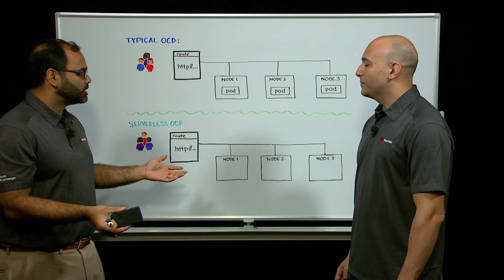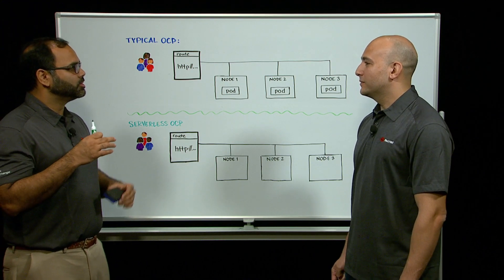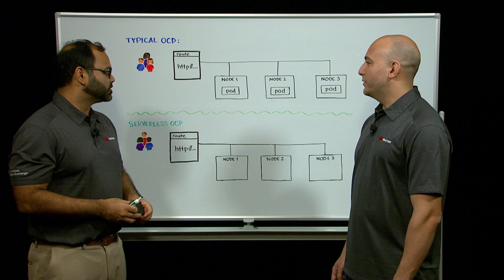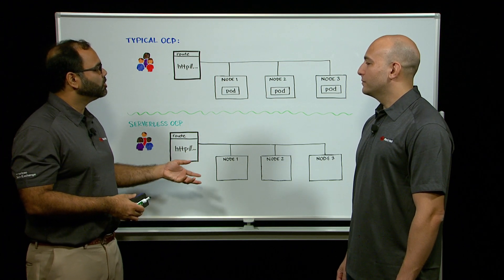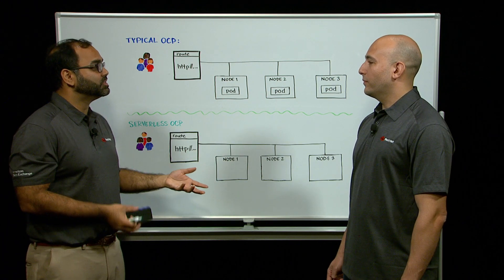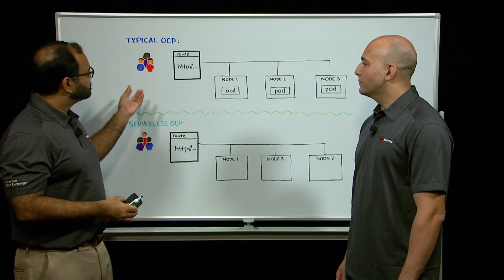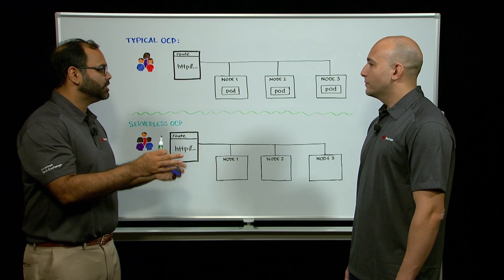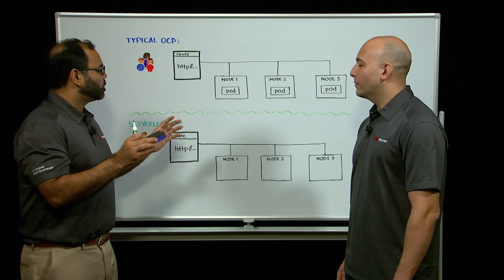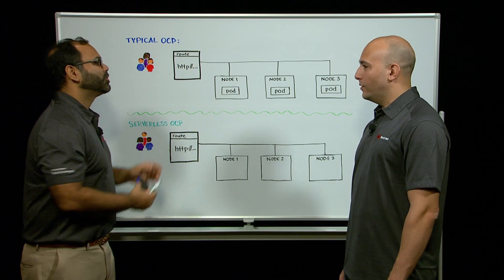Now, there are some options with auto-scaling as well, but those tend to be around CPU usage and memory usage, so OpenShift can detect that your available number of pods are being overwhelmed because of CPU usage or memory usage and scale them up, but they're not directly related to the traffic coming in, so it's great for CPU load, but not great for incoming requests.